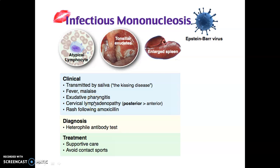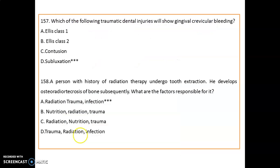Infectious mononucleosis is caused by Epstein-Barr virus and consists of atypical lymphocytes, tonsillar exudates, and large spleen. It is known as the 'kissing disease' because it is transmitted by saliva. Clinical features: fever, malaise, exudative pharyngitis, and cervical lymphadenopathy — specifically posterior lymphadenopathy. The patient may develop a rash following amoxicillin. Diagnosis: heterophile antibody test. Treatment: supportive care and avoiding contact sports.